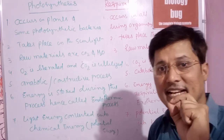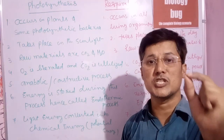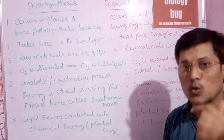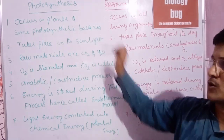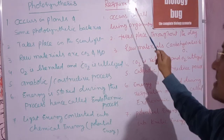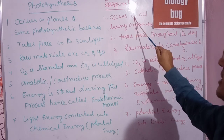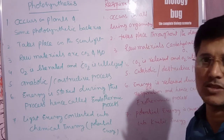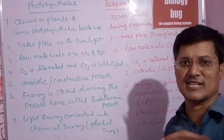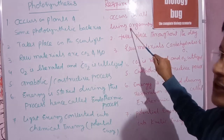Only plants that contain the green pigment chloroplast can carry out photosynthesis. Respiration, on the other hand, occurs in all living organisms, because every living organism requires energy — that's why every living organism carries out respiration.